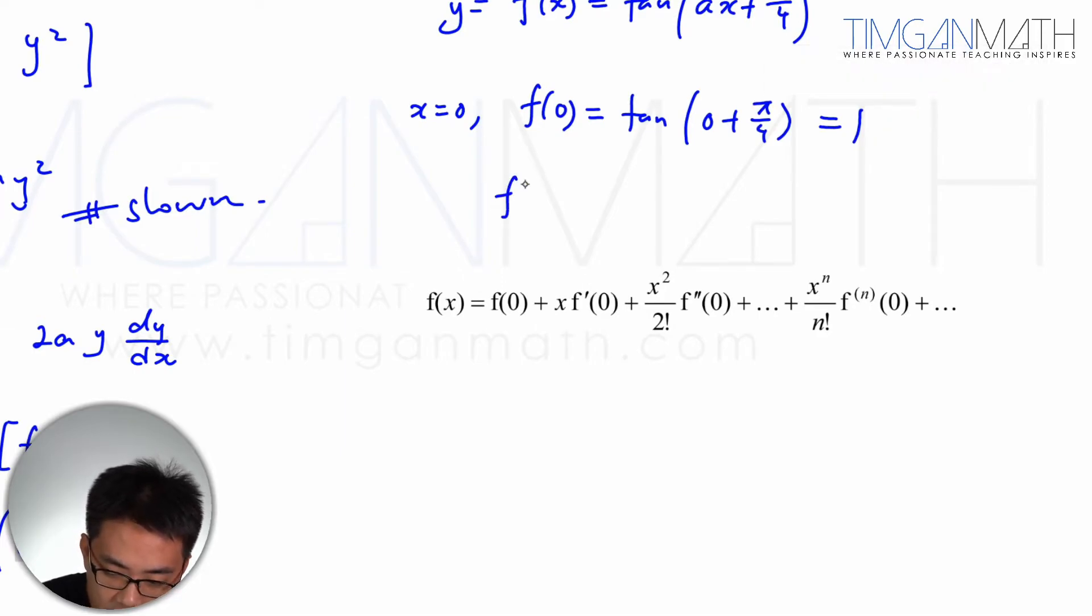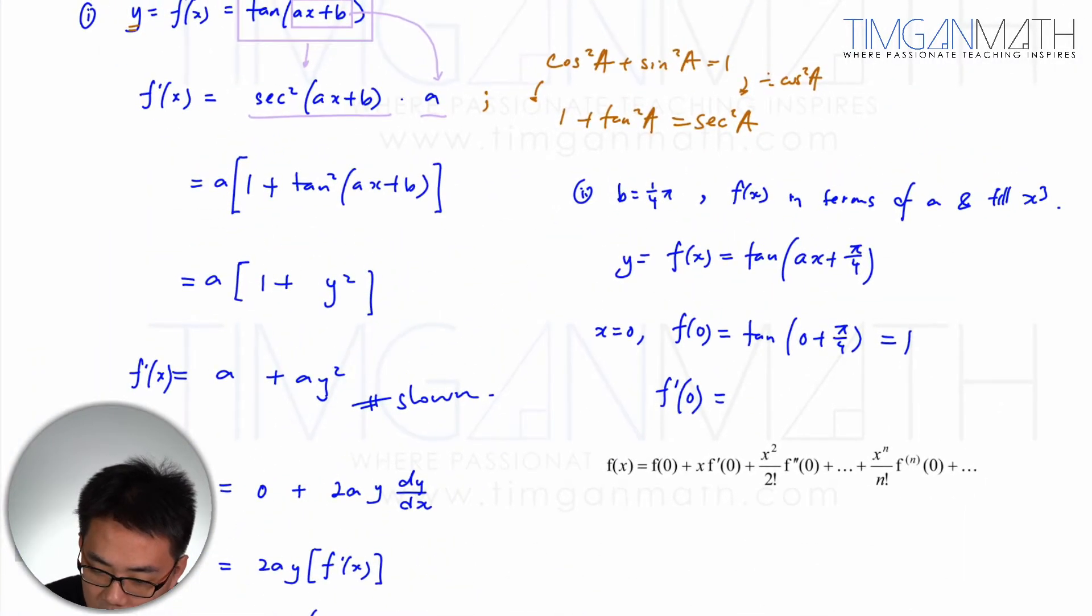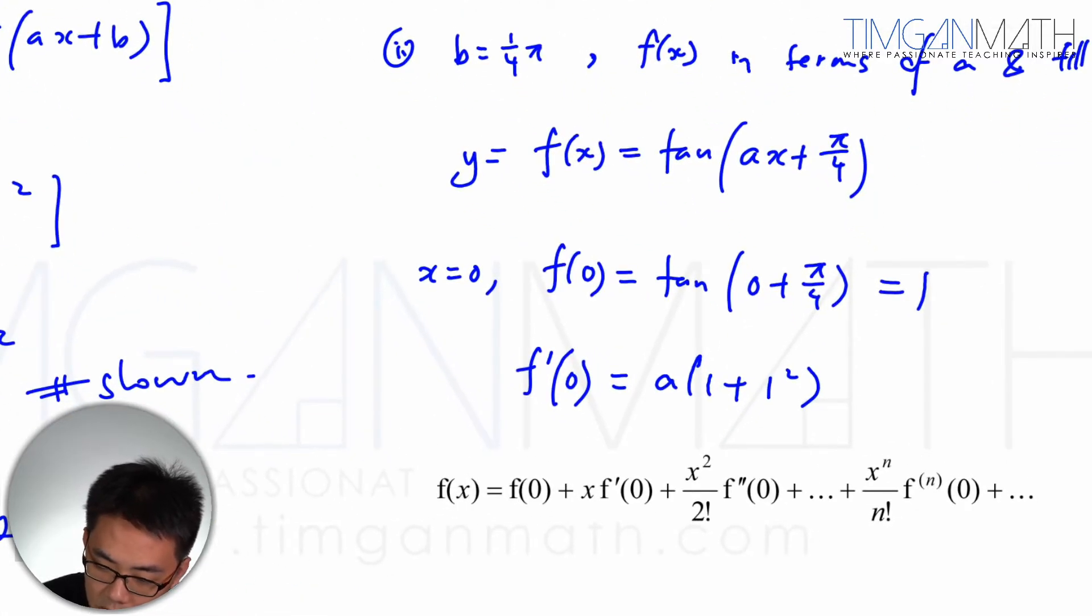So f'(0) will then be, we're just going to replace this in, f'(0) will just be a(1 + 1²). Because this is actually my y is actually 1. So this case will be 2a. That's pretty okay.